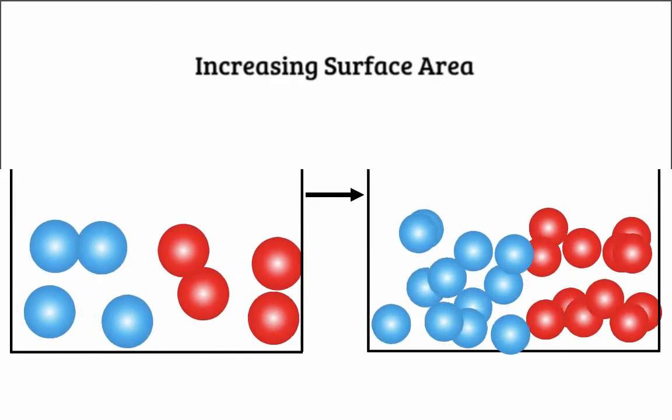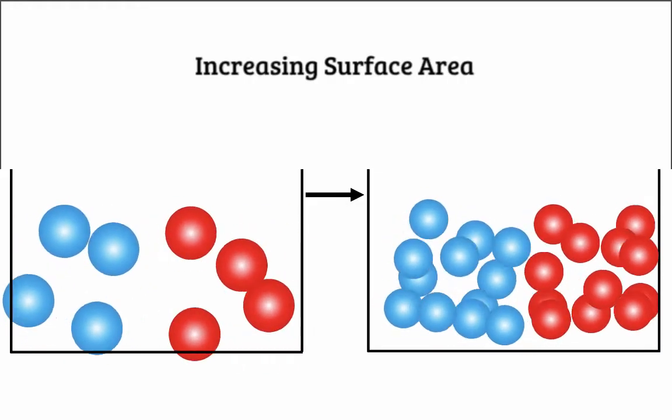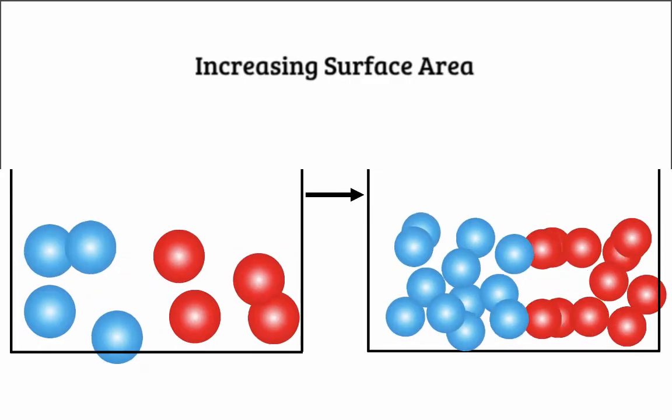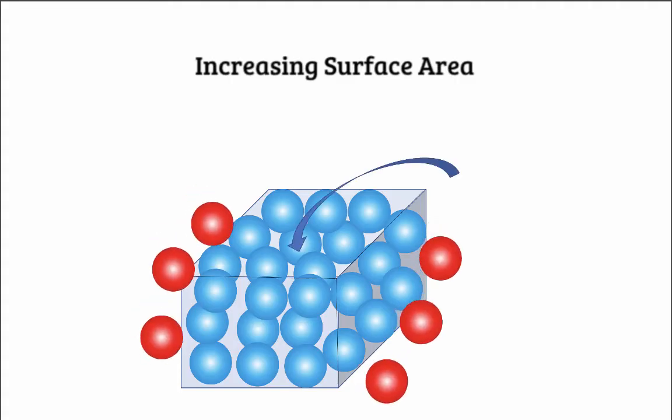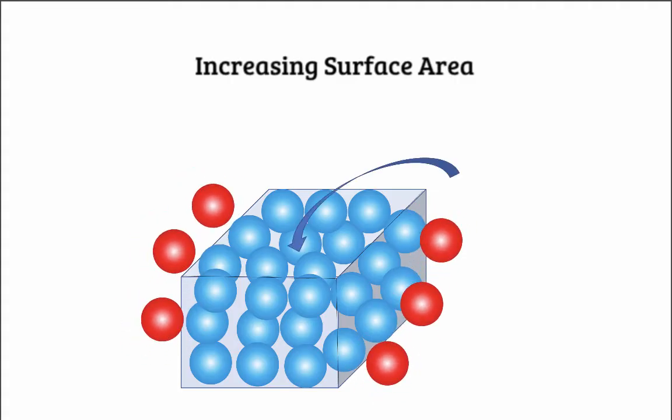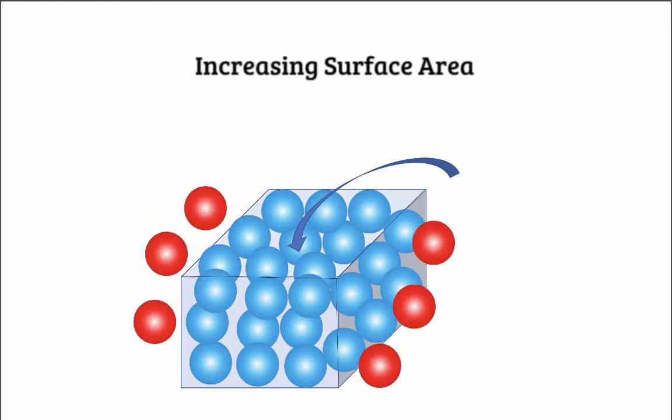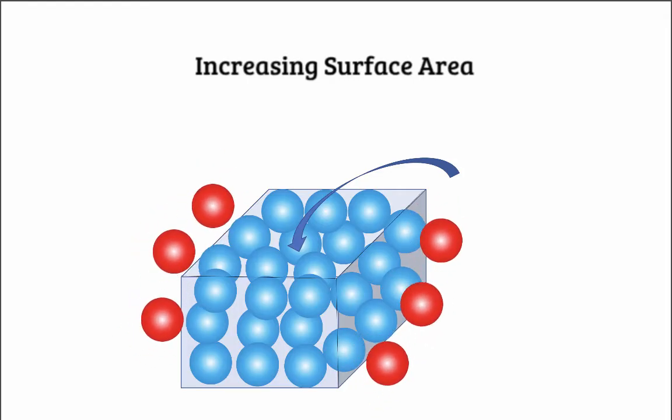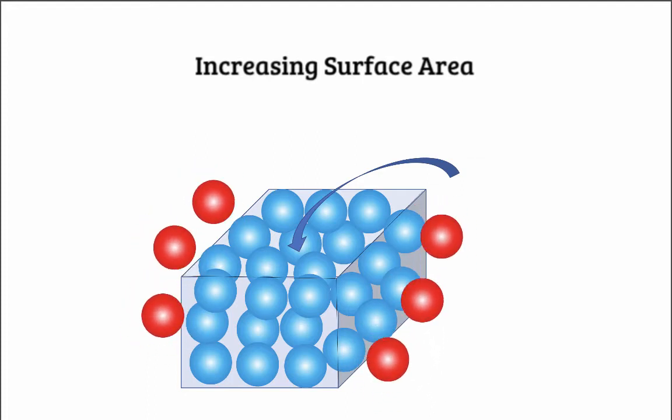While this example isn't a chemical reaction, it helps us visualize why this works. By crushing up the reactant into smaller parts, there's more surface area available for the other reactant to reach. In a cube or large lump, there are many particles in the center that the other reactant cannot get to. This is why increasing the surface area will lead to an increase in the rate of reaction.